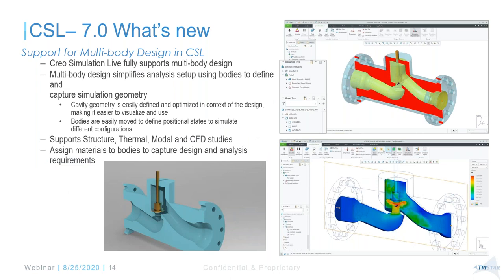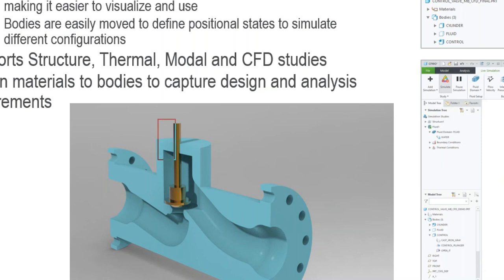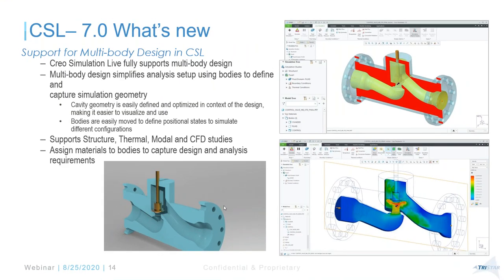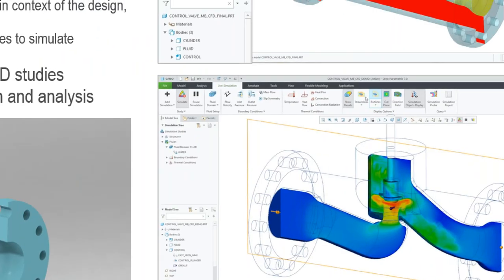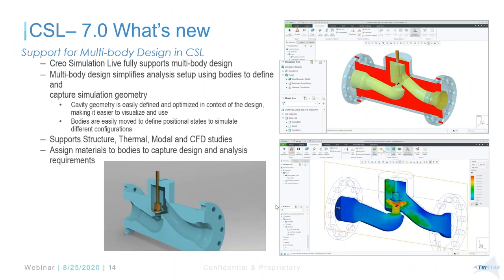One of the biggest enhancements in Creo 7.0 is multi-body, and Creo Simulation Live leverages that multi-body capability especially for fluid flow. For example, you can have a plunger body, a fluid volume body, and an outside body — all as one single part with multiple bodies. You can even mimic the open and close of a plunger. Using flexible modeling or edit dimensions, you can see in real time the update on flow results like pressure and velocity.